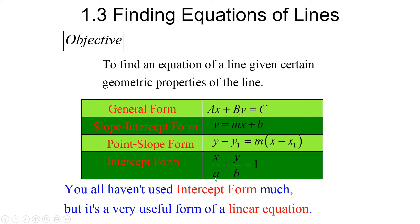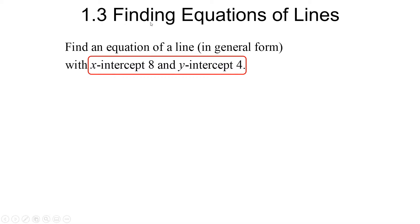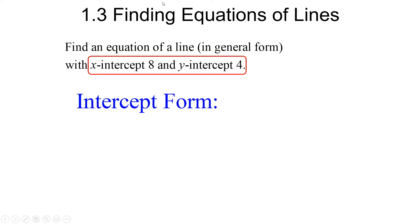Here's our first example problem: find an equation of a line in general form with X-intercept 8 and Y-intercept 4. The geometric information given is the X-intercept and the Y-intercept. So we're going to use intercept form of a line to start. Work on memorizing these things — make sure you write it down every time to make yourself more efficient. So that's going to be X over A plus Y over B equals 1.